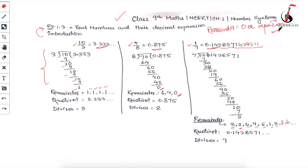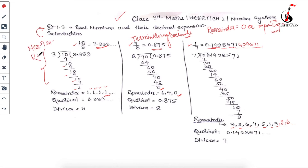So the remainder is either equal to zero or repeating. These are called rational numbers. If your remainder is zero, that kind of decimal is called a terminating decimal, which we have already studied in previous lectures. Those whose remainders are repeating are called non-terminating but repeating decimals. Previously I explained this on the basis of the quotient, but now I'm telling you the same thing on the basis of the remainder - it's actually the same thing.